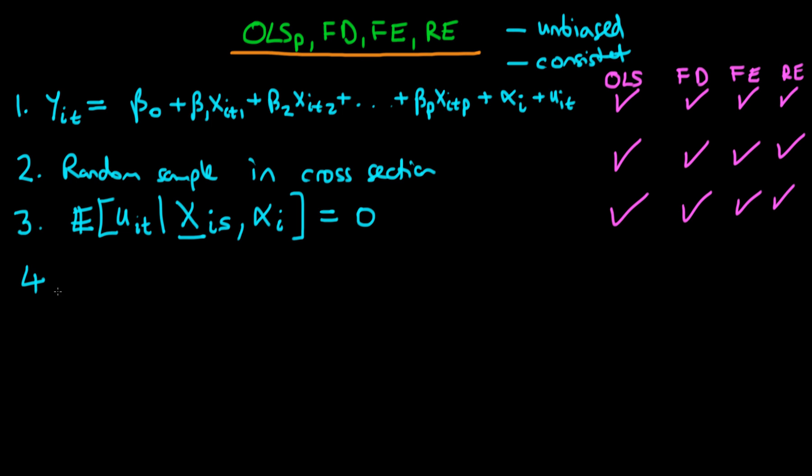The fourth assumption is that we have no perfect collinearity so that just means that there aren't any linear combinations of variables which are exact in terms of the explanatory variables and we require that this is a prerequisite again for each of these different models.